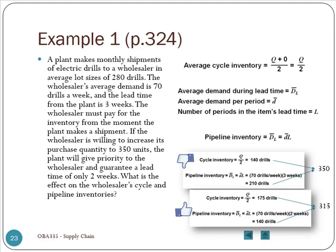Here's an example. A company is buying drills from their suppliers. Currently, their average lot size is 280 drills. The average demand per week is 70, and the lead time from the supplier is three weeks. The wholesaler must pay for the inventory from the moment the plant makes a shipment, so as soon as the product is shipped out of the suppliers, it becomes pipeline inventory with a lead time of three weeks.